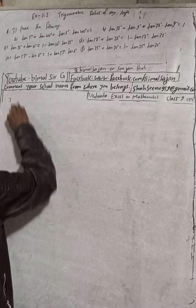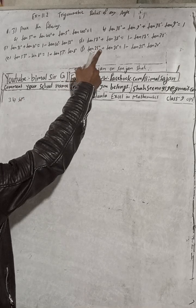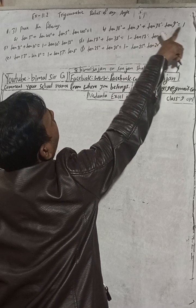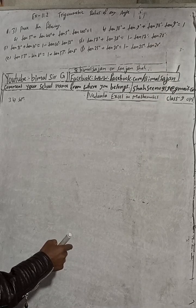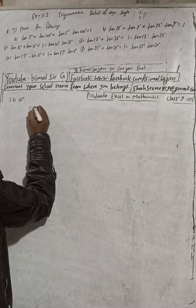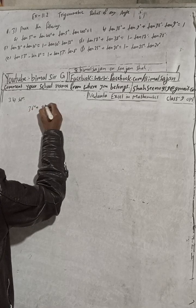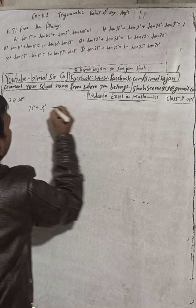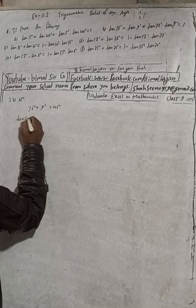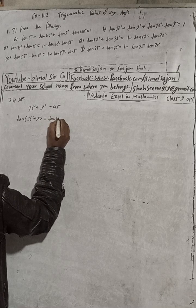Part B: Prove tan36° + tan9° + tan36°·tan9° = 1. We can see the combination: 36 + 9 = 45°. So write 36° + 9° = 45°, then take tan both sides: tan(36° + 9°) = tan45°.